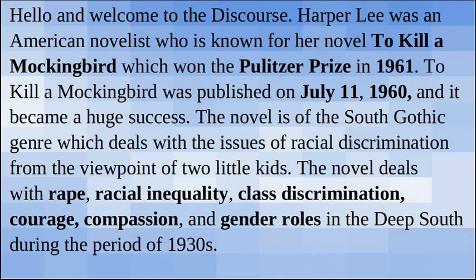To Kill a Mockingbird was published on July 11, 1960 and it became a huge success. The novel is of the Southern Gothic genre which deals with the issues of racial discrimination from the viewpoint of two little kids. The novel deals with rape, racial inequality, class discrimination, courage, compassion and gender roles in the Deep South during the period of the 1930s.